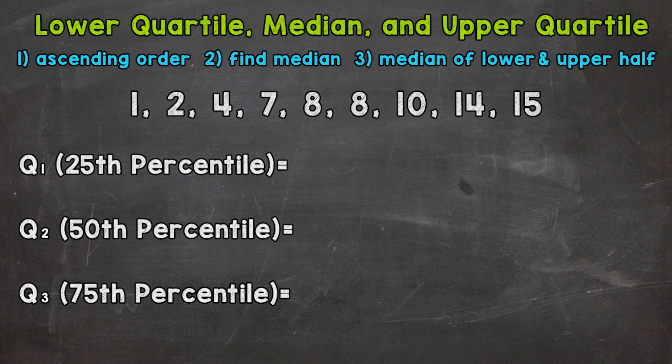All of this information helps us understand and interpret data. Quartiles are a building block for other topics involving data, so understanding this will help you moving forward. We have two examples to work through — one with an odd number of numbers in the data set, and one with an even number of numbers.